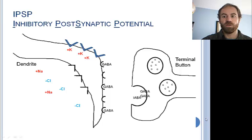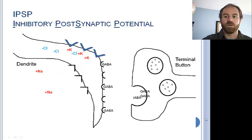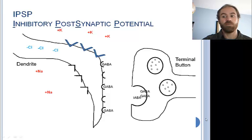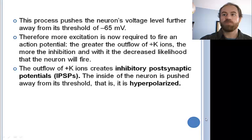GABA, too, fits into these receptors like a key in a lock and opens the neurotransmitter-gated channels. However, instead of opening sodium channels, GABA opens either chloride channels or potassium channels. From our discussion on resting potential, we know that the net effect of the forces working on potassium is to push them out of the neuron. The resulting effect is to make the negative 70 millivolt potential inside the neuron even more negative — say to negative 72, negative 75, or even negative 80 millivolts. This process pushes the neuron's voltage level further away from its threshold of negative 65 millivolts.